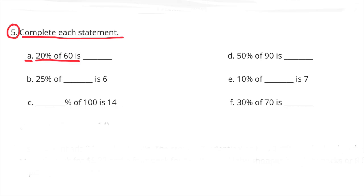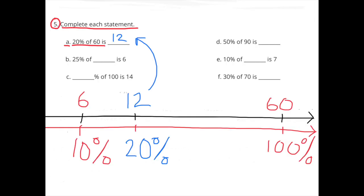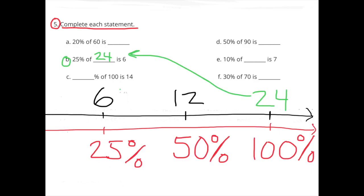Number 5: Complete each statement. A: 20% of 60 is 12. 100% of 60 is 60, and 10% of 60 is 6. To get 20%, I double 10%, so I double 6 to get 12. B: 25% of what number is 6? I know 25% is 6, and if I multiply 25% times 4, I get 100%. So I multiply 6 times 4 to get 24. 25% of 24 is 6.